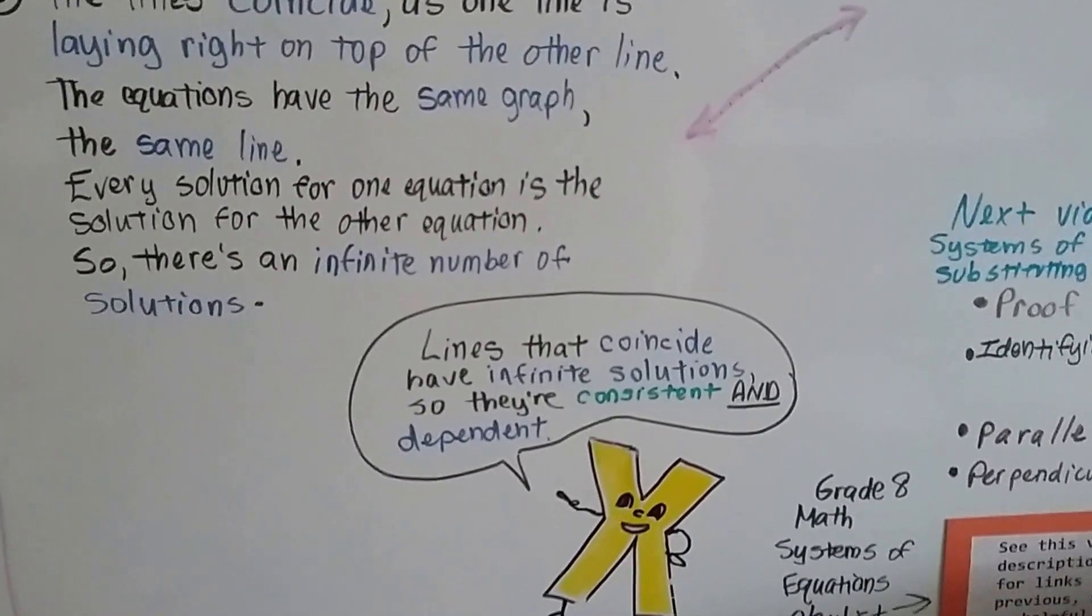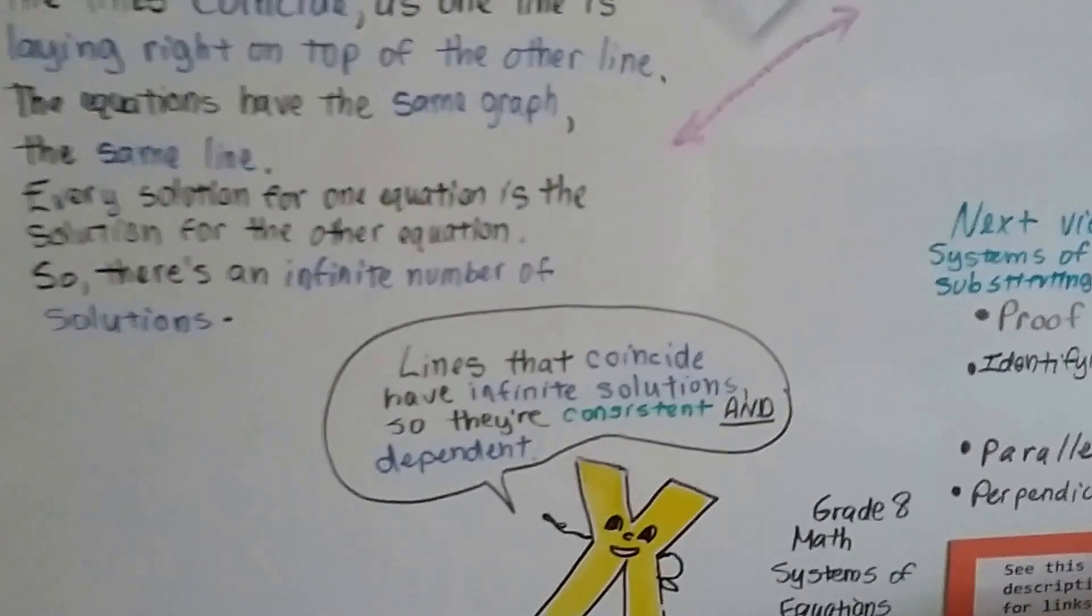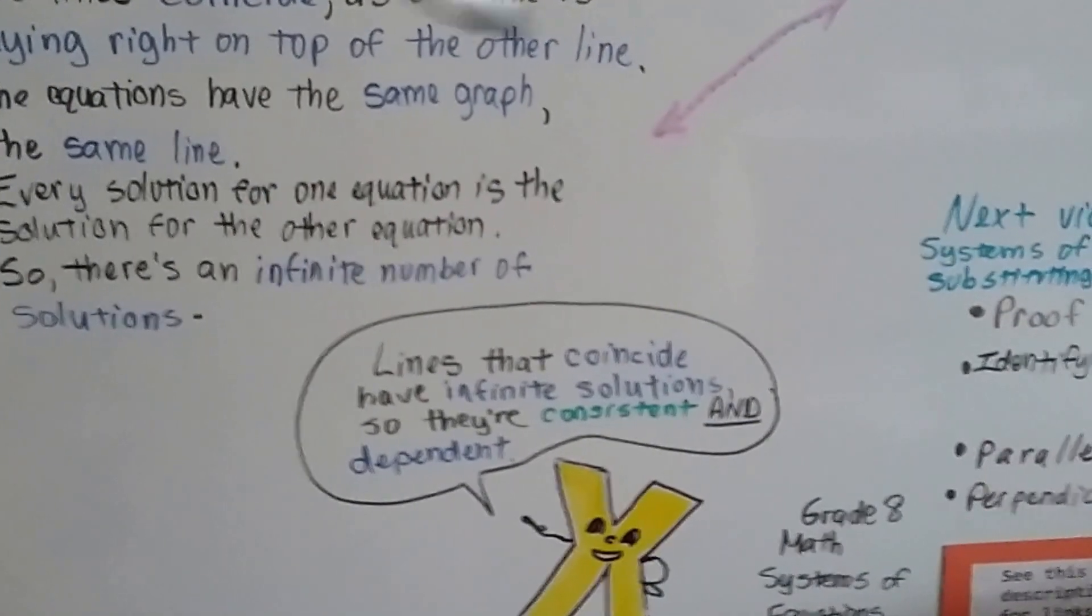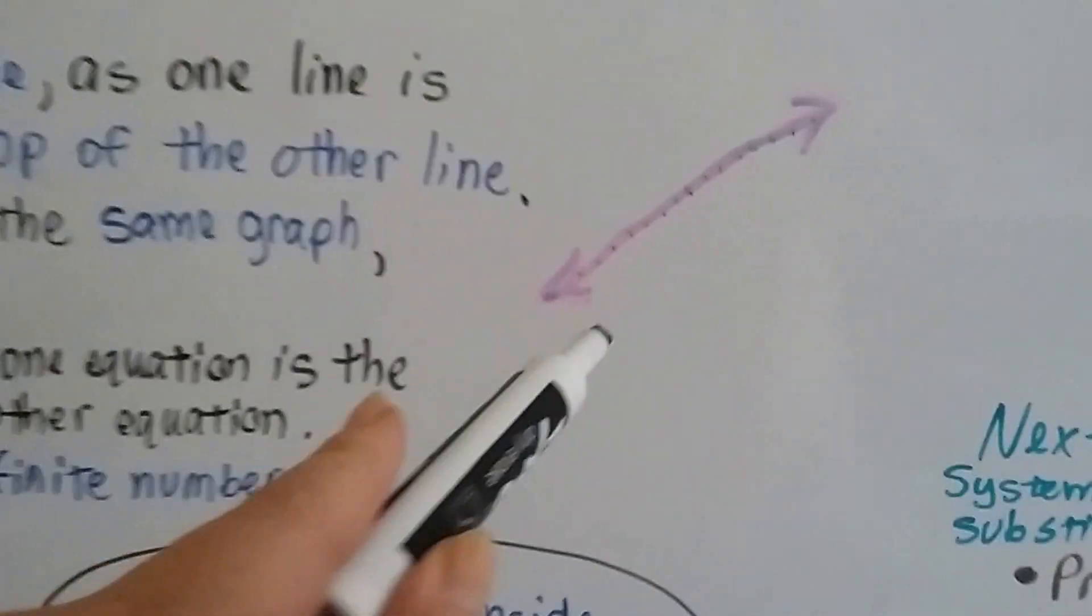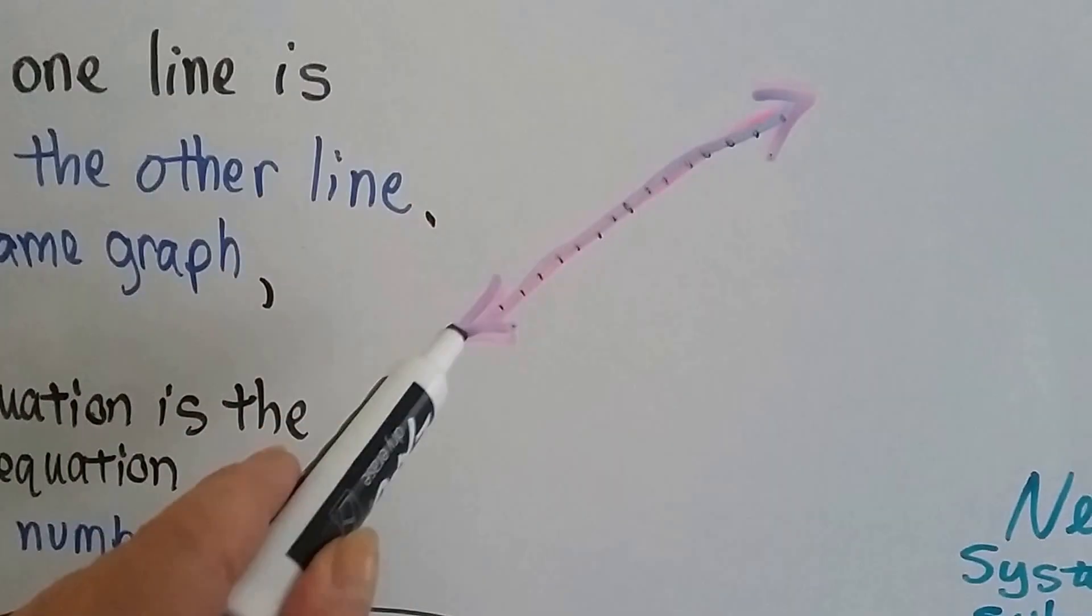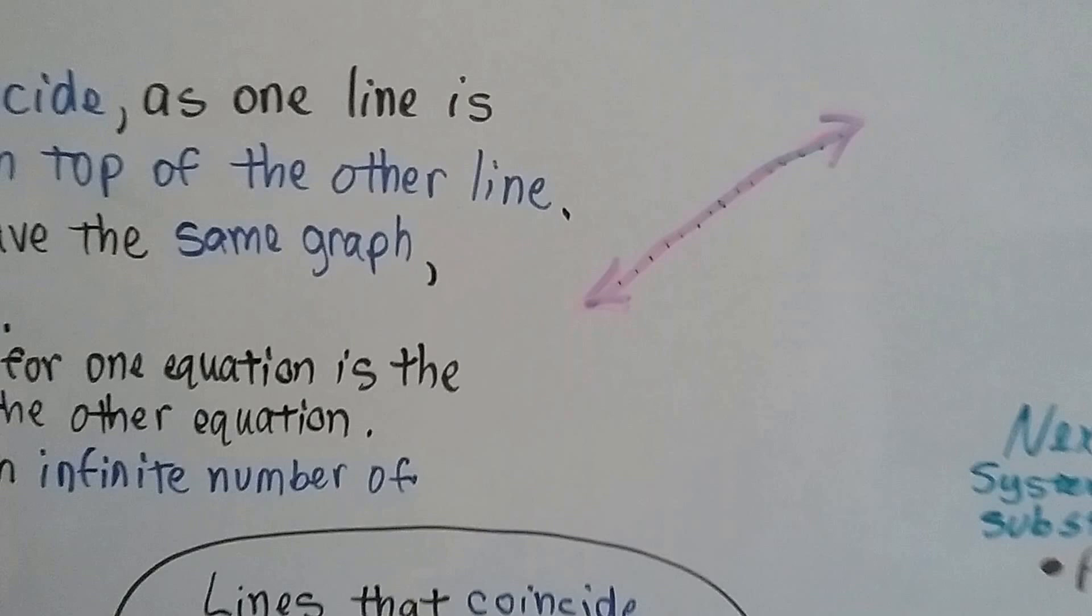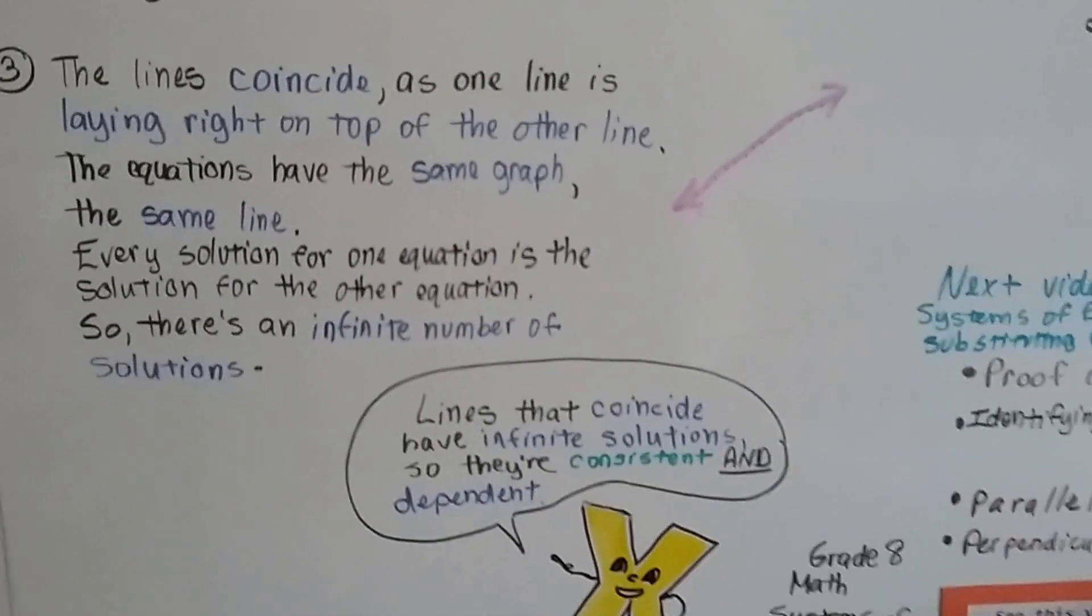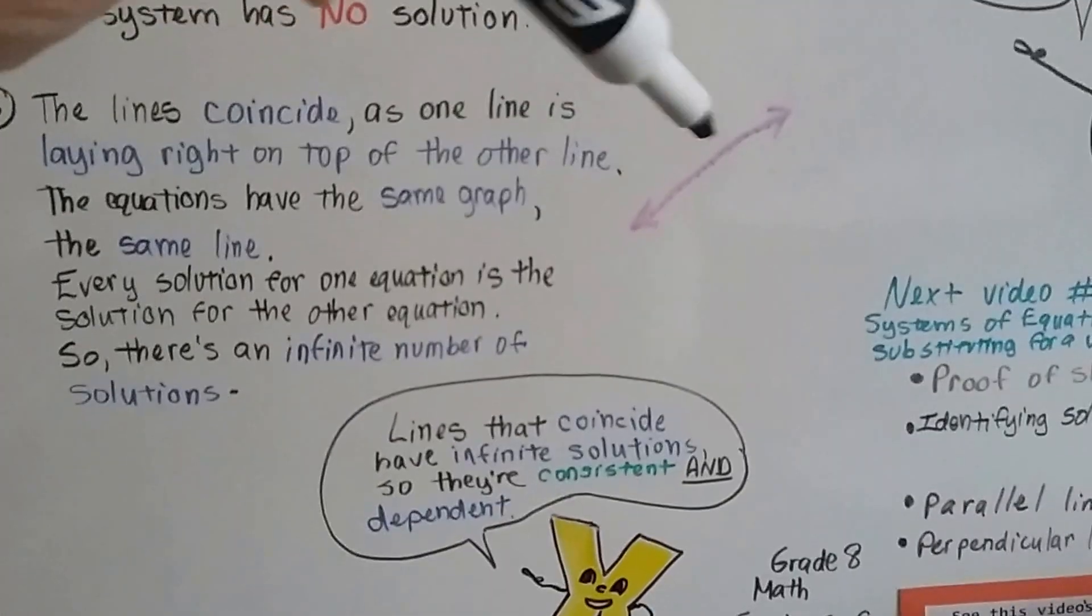And every solution for the pink one, for one equation, is a solution for the other one. Because they're laying on top of each other. So you could have a million microscopic little points along these lines here that are a solution. Because they're the same. They're touching at every single one of those. In this one, it's only touching at one spot. In this one, they're touching infinitely.